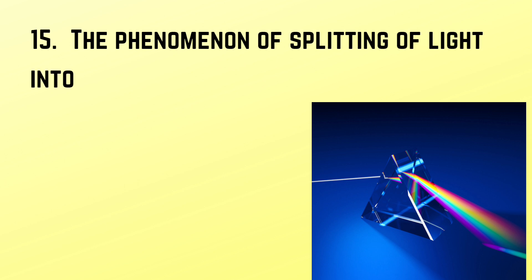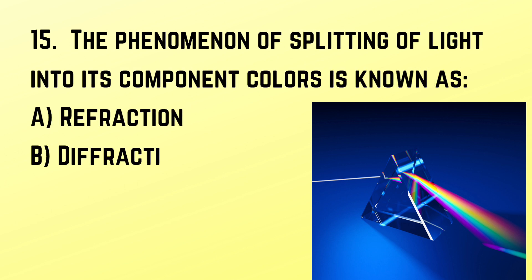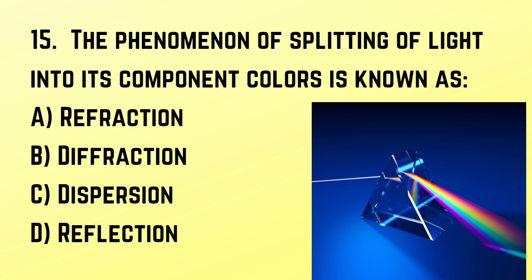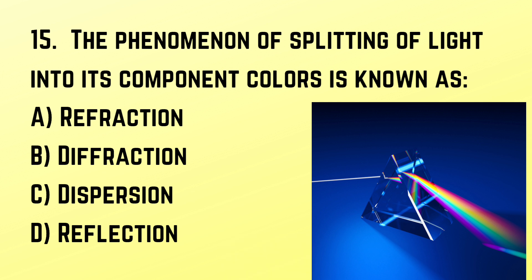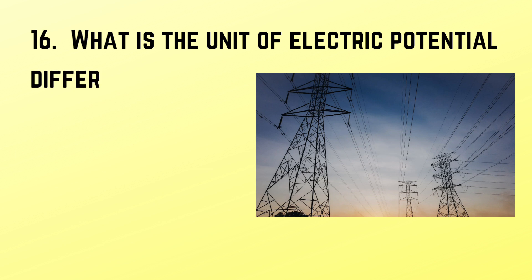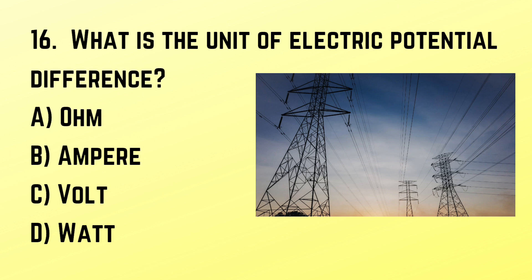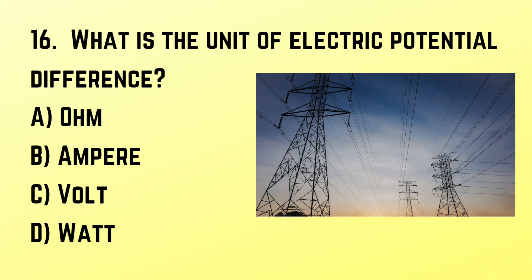Question number 15: The phenomenon of splitting of light into its component colors is known as what? Correct answer: C. Dispersion. Question number 16: What is the unit of electric potential difference? Correct answer: C. Volt.